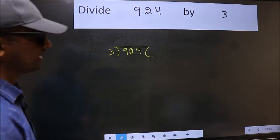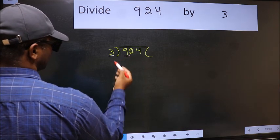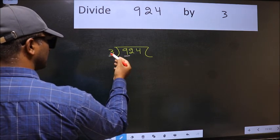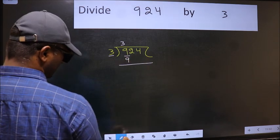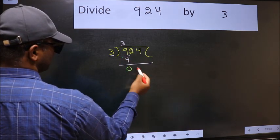Next. Here we have 9 and here 3. When do we get 9 in 3 table? 3 times 3 is 9. Now we should subtract. We get 0.